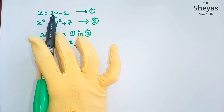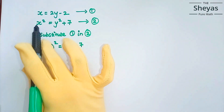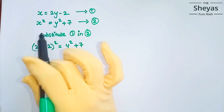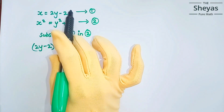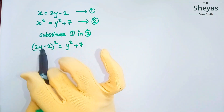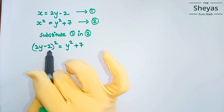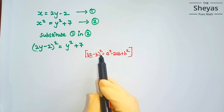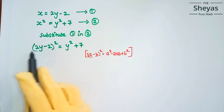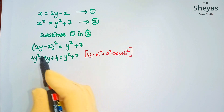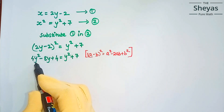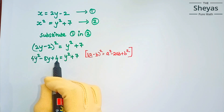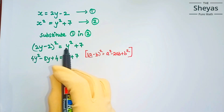Substituting the value of x = 2y − 2 from equation 1 into equation 2, we get (2y − 2)² = y² + 7. Applying the formula (a − b)² = a² − 2ab + b², we expand to get 4y² − 8y + 4 = y² + 7.